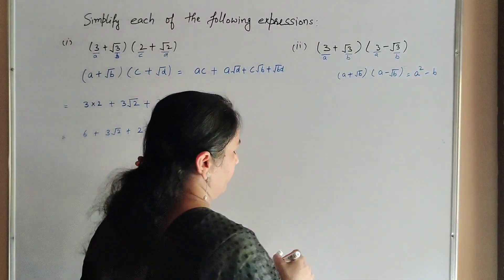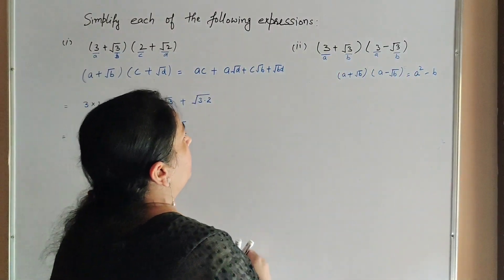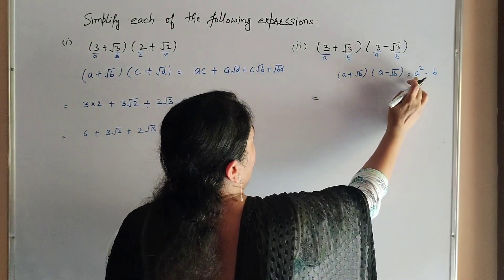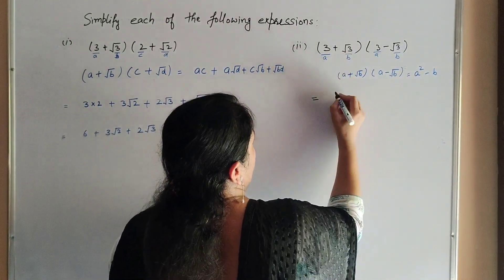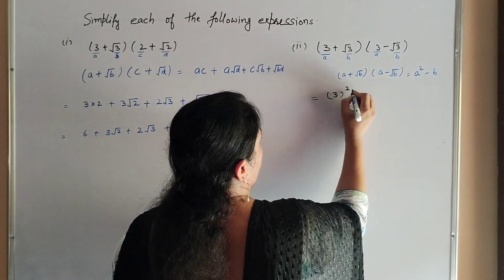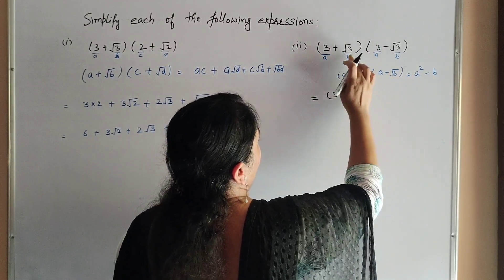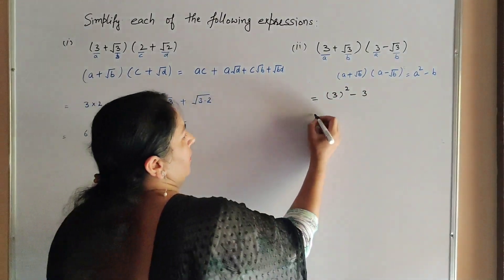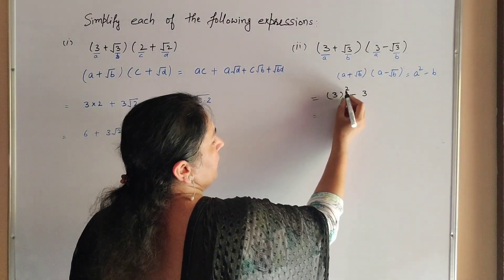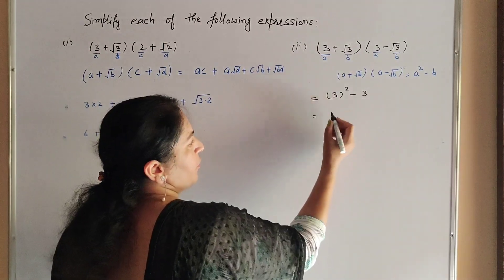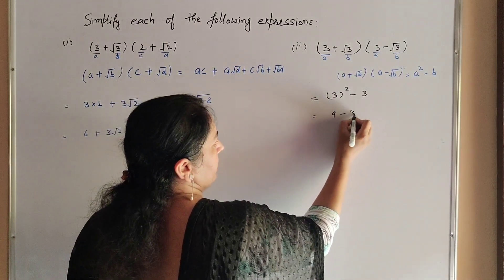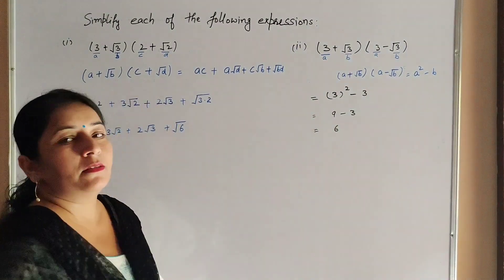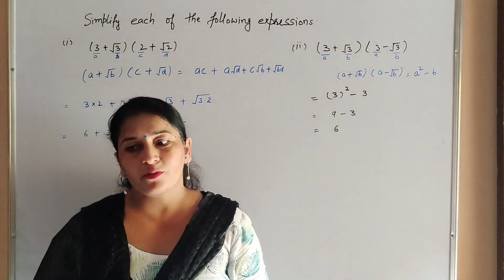Applying the identity: a² − b = 3² − 3 = 9 − 3 = 6. So the answer is 6.